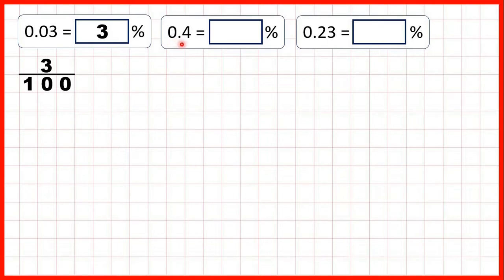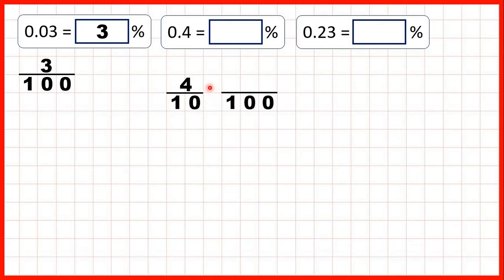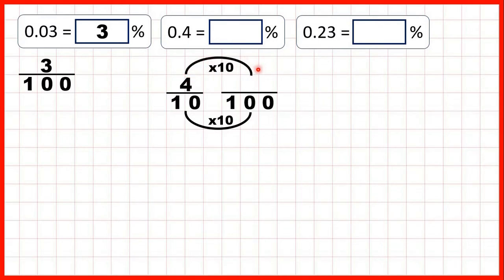Now we have 0.4, and here we need to be careful. Remember the first digit after the decimal point is the tenths digit, so 0.4 means that we have four tenths. But a percentage is always a fraction which has a denominator of 100, so we need to find a fraction equivalent to 4 tenths with a denominator of 100. We can use multiplication: 10 times 10 is 100, and what we do to the denominator we do to the numerator as well, and 4 times 10 is 40. So because 0.4 or 4 tenths is equivalent to 40 hundredths, that's the same as 40 percent.